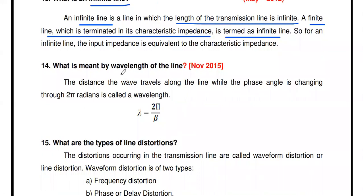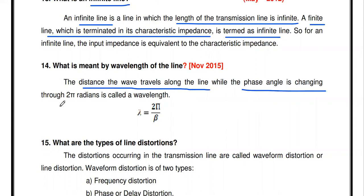What is the wavelength of the line? (2015 exam question) The wavelength λ is the distance a wave travels along the line while the phase angle changes through 2π radians. The formula is: wavelength λ = 2π/β.